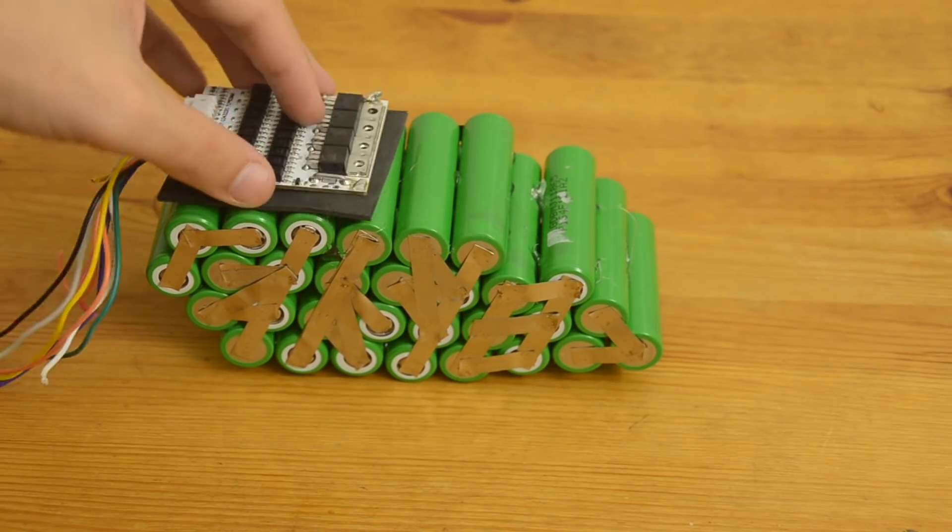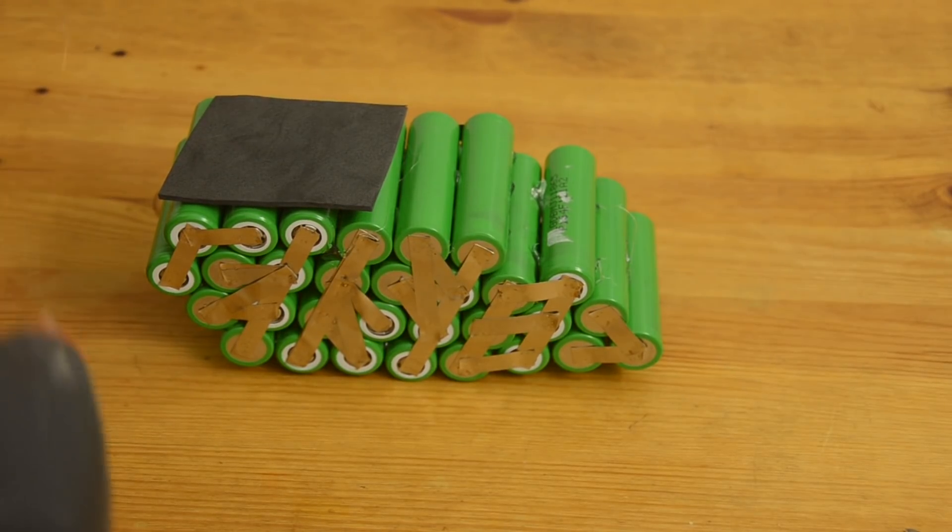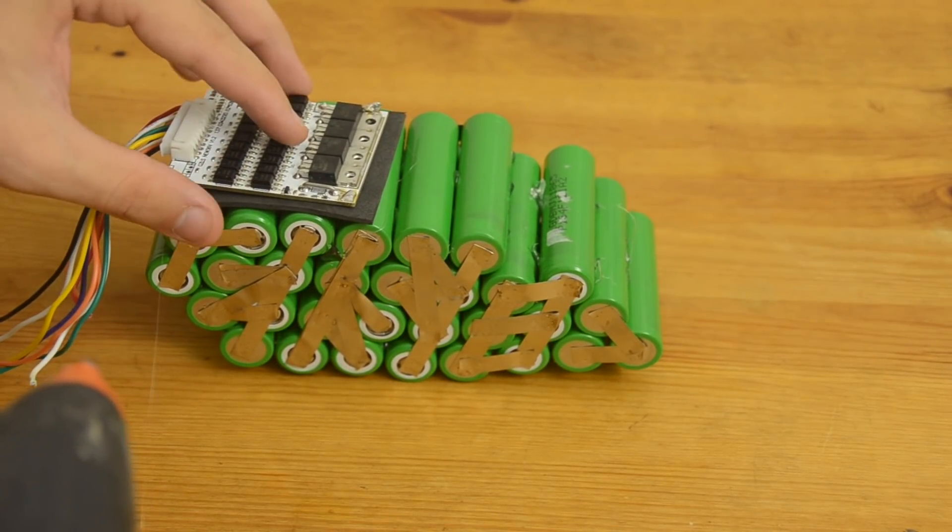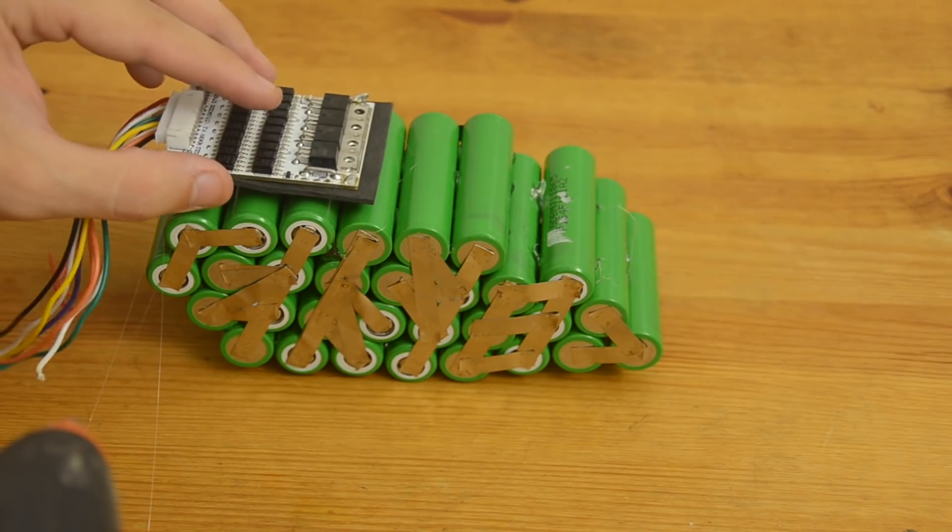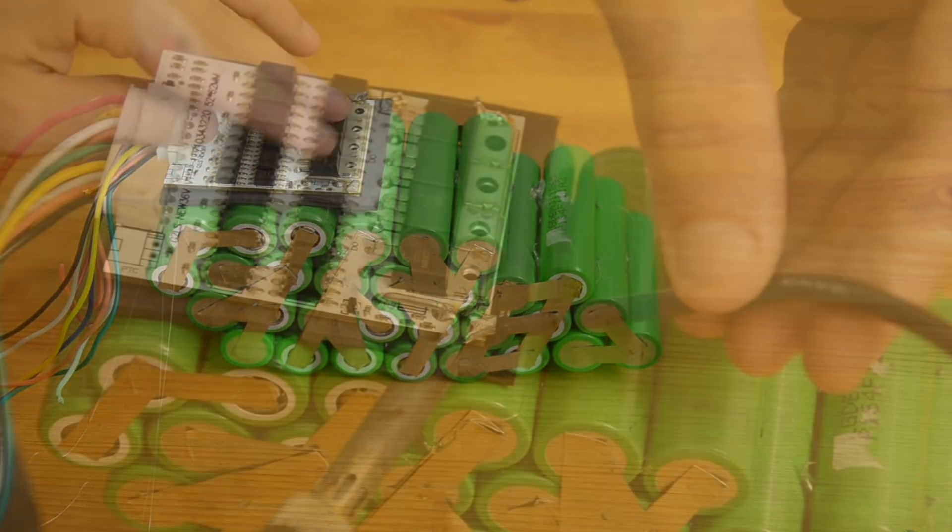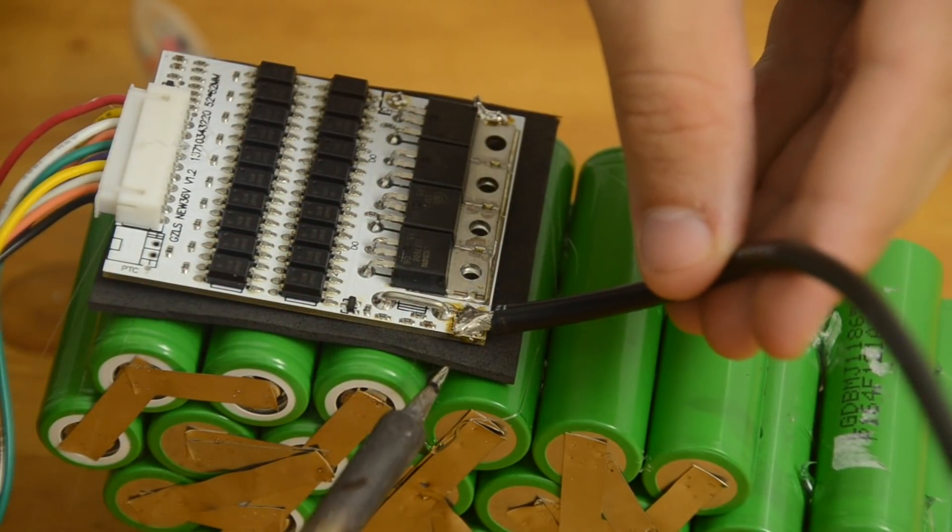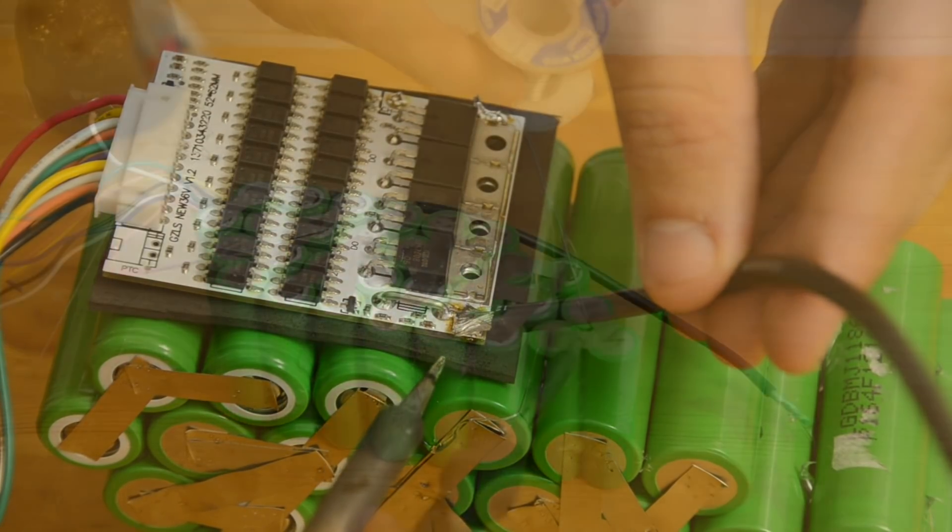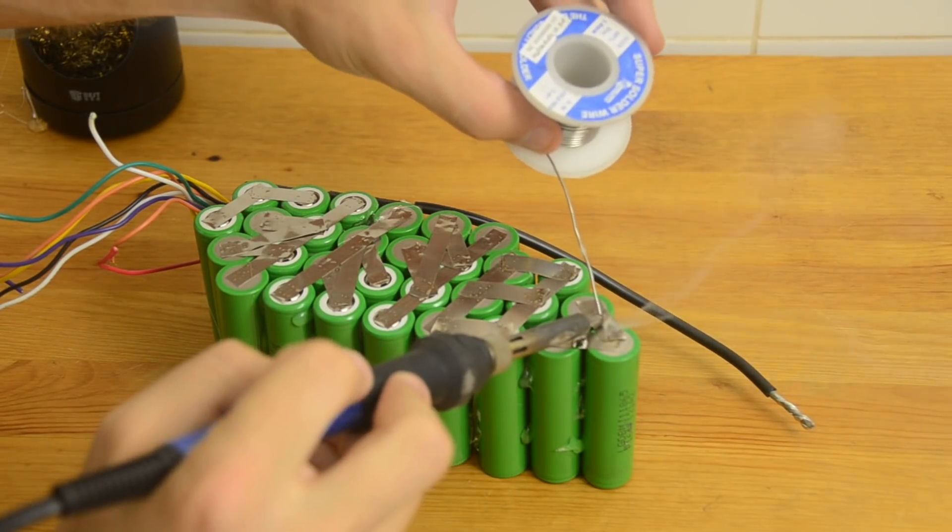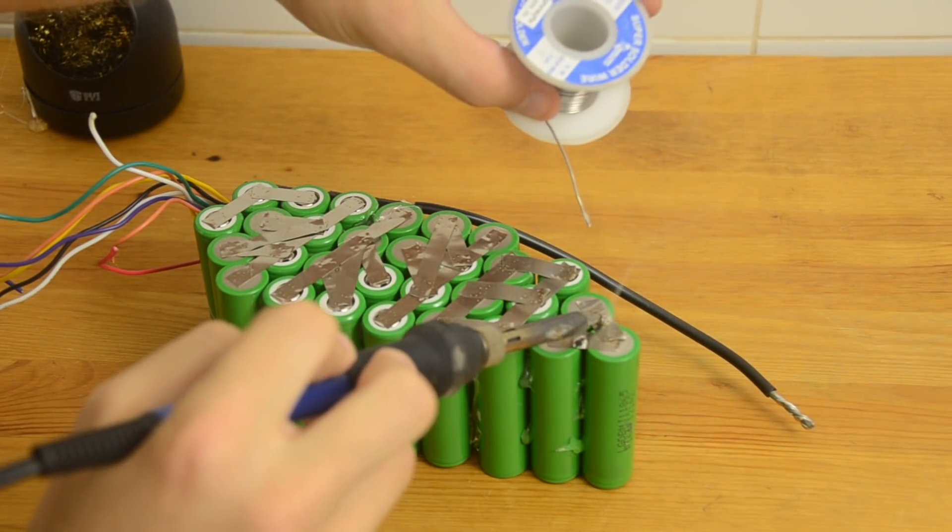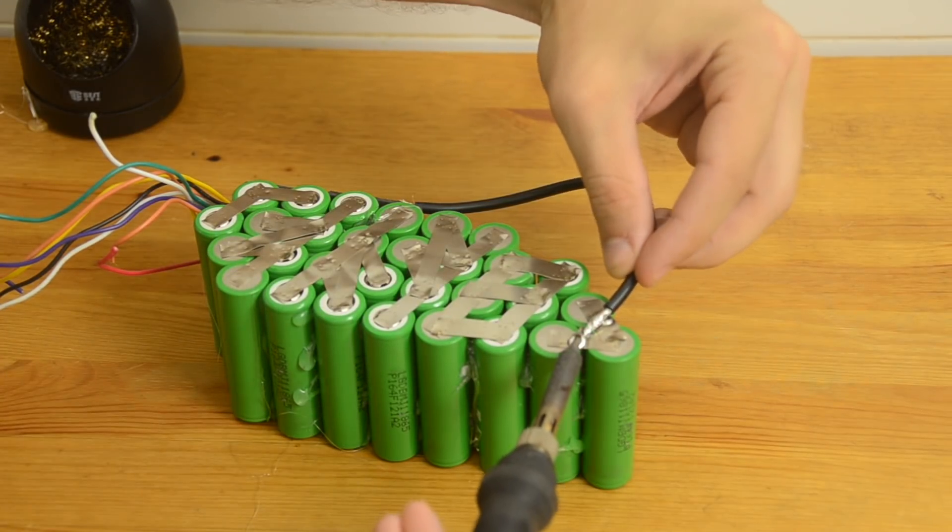I like to add a small piece of foam between my BMS and the pack, both for vibration dampening, and just to keep the two parts electrically insulated from each other. Hot glue is a fine way to attach them. Next, I'll solder my B- wire to the BMS, and then the other end to the negative terminal of my battery. Notice that I'm soldering on the nickel strip between the cells, and not directly above a cell. That helps reduce the amount of heat that gets transferred to the cells.